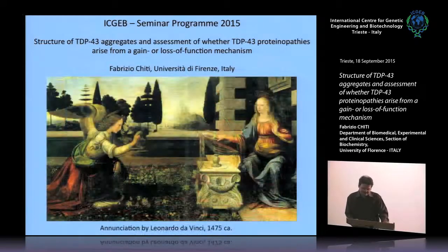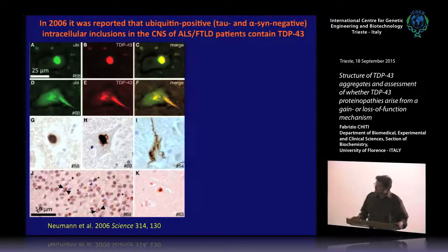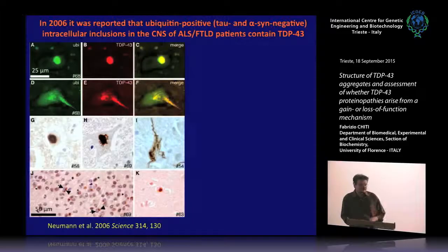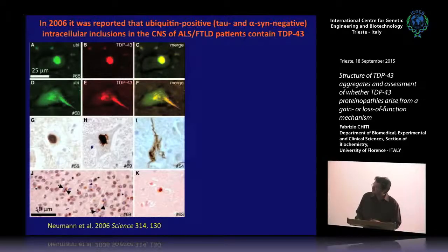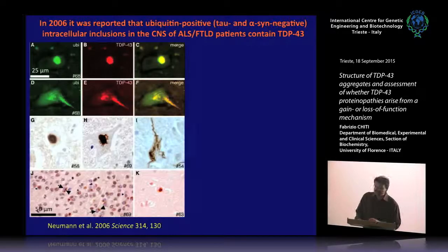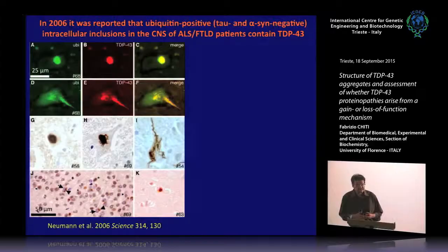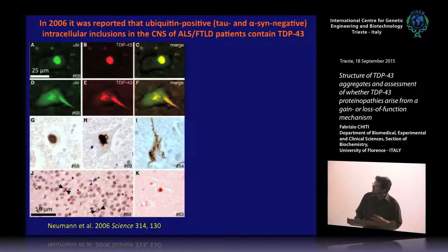We took this opportunity to start studying TDP43. The involvement of TDP43 as a protein forming intracellular inclusions started in 2006 from the famous paper published in Science from Virginia Lee and collaborators. These people found that the ubiquitin-positive intracellular inclusions in the central nervous system of ALS or FTD-FTLD patients are actually formed by the TDP43 protein.